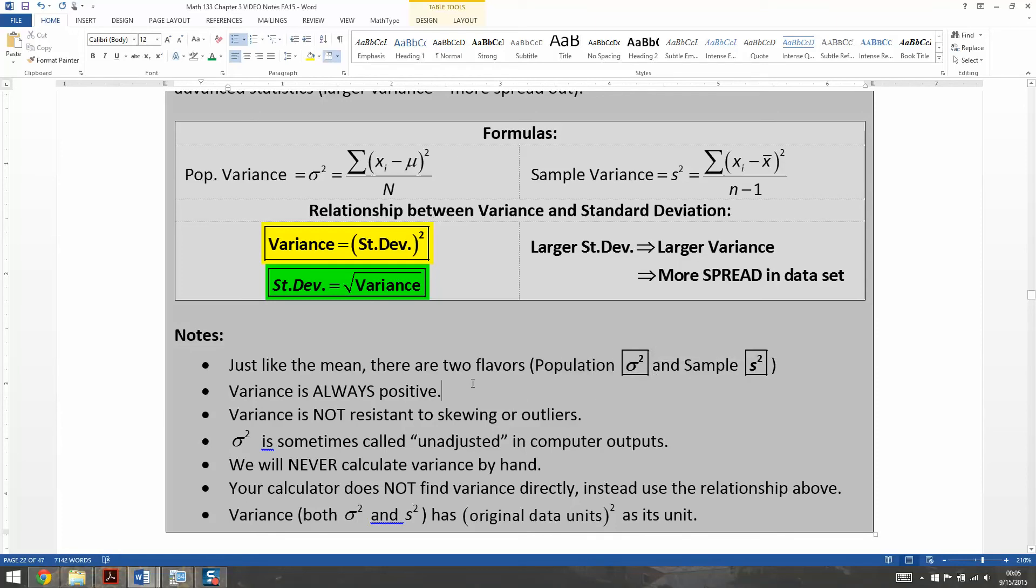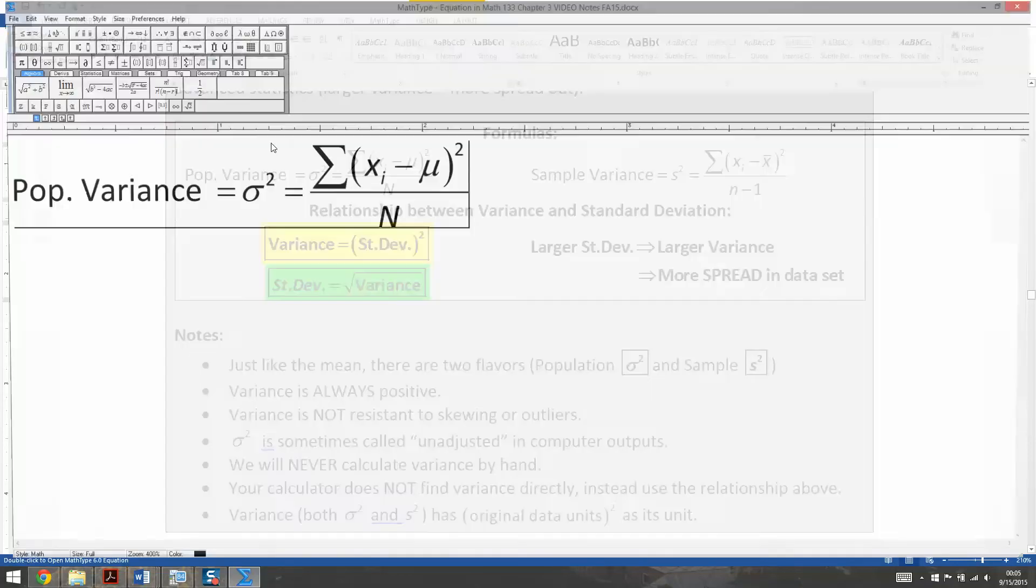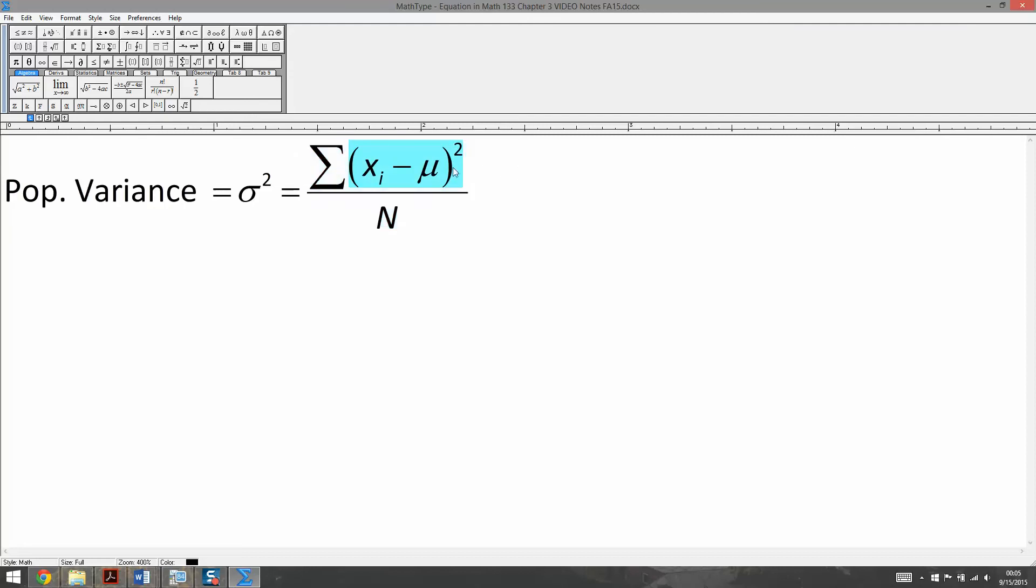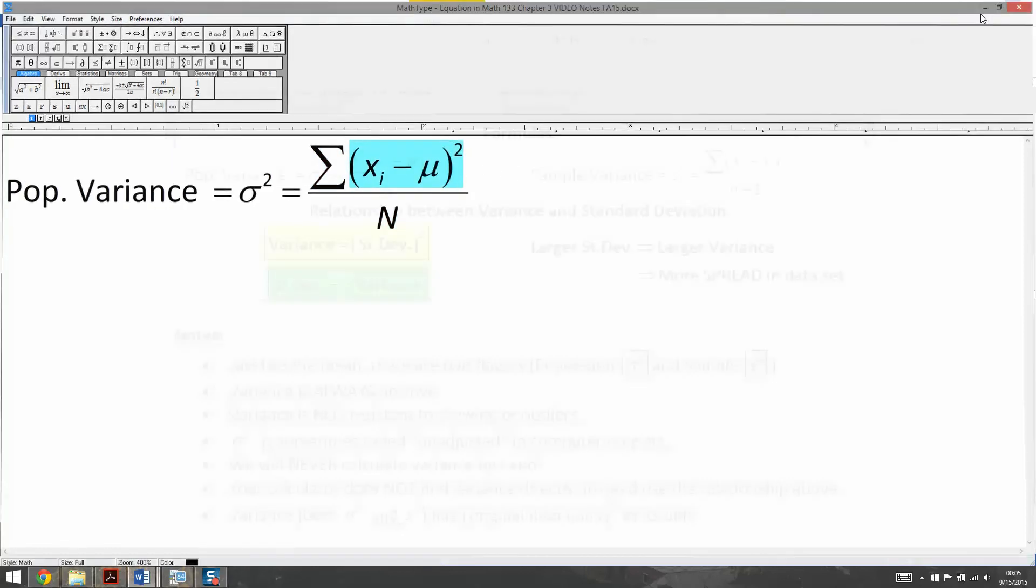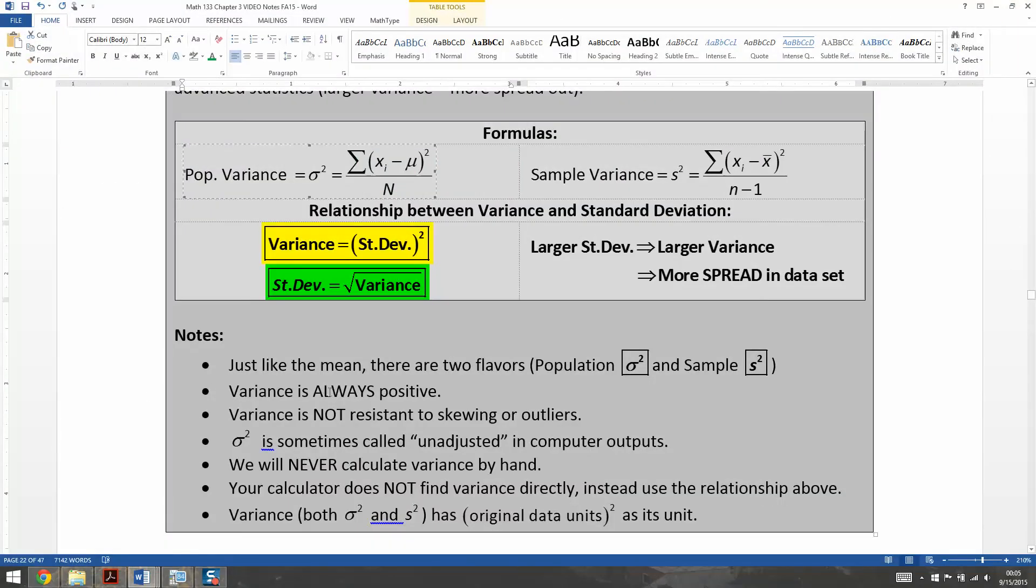Variance is always positive, just like standard deviation is, because there's the squaring involved of the deviations in here in the formula. That'll turn everything positive, no matter what, right there. So that would mean that, of course, the variance is positive. It's not resistant to outliers, just like standard deviation isn't. I mean, all variance is, is the standard deviation squared. So if the standard deviation isn't resistant, neither is the variance.